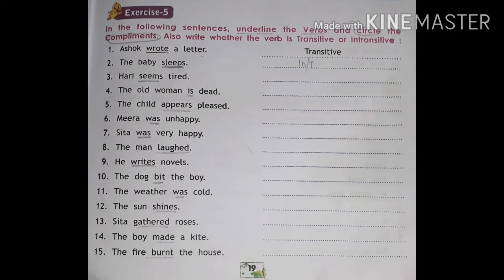Number thirteen: Sita gathered roses. Underline 'gathered' — roses is the object, so write 'roses' as the object and 'gathered' is the verb. It is a transitive verb. Number fourteen: the boy made a kite. Underline 'made' and the object is 'a kite'. What did the boy make? Answer: a kite. So 'kite' is the object — it is again a transitive verb.